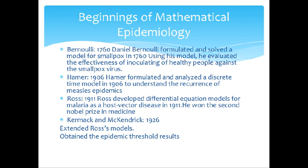Daniel Bernoulli formulated and solved a model for smallpox in 1760. Using his model, he evaluated the effectiveness of healthy people against the smallpox virus. Hammer, 1906.